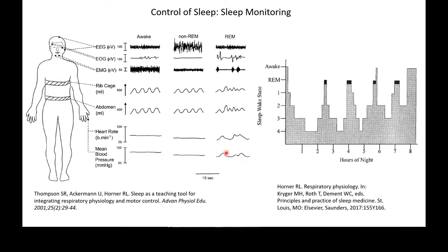We do cycle between these different kinds of sleep all through the night, as this diagram shows, taken from Richard Horner's chapter in respiratory physiology. These come from a useful paper by Thompson, Ackerman, and Richard Horner. During the night we go through periodic changes, and periodically we will go into REM sleep. As we approach morning, that REM sleep period becomes longer and longer, until finally we are back to being awake.